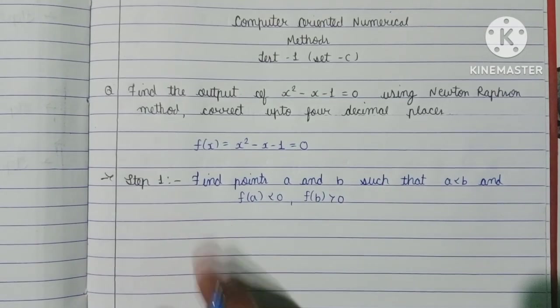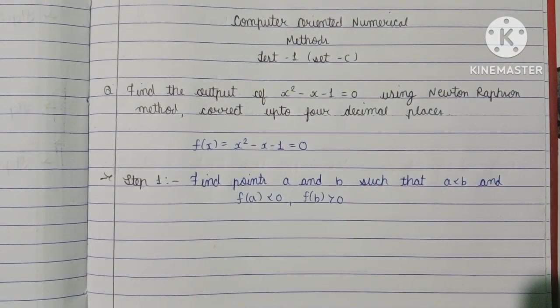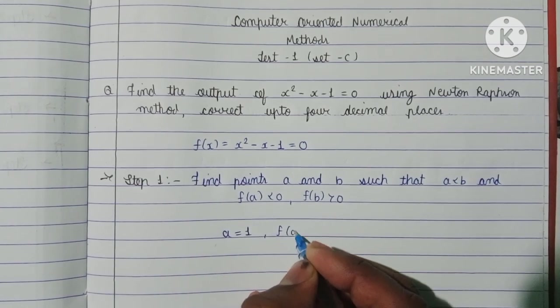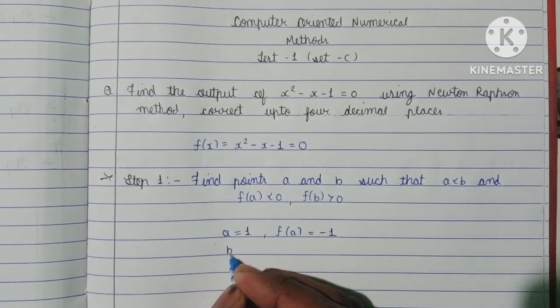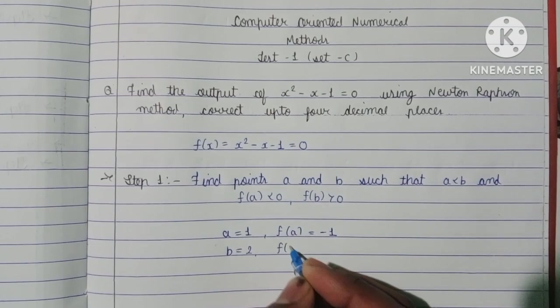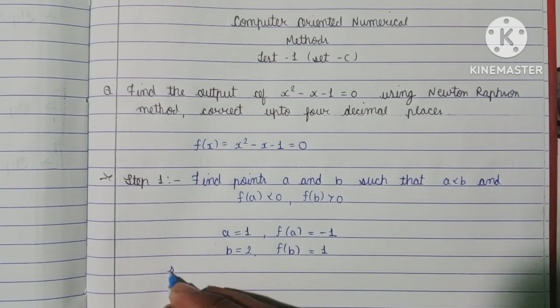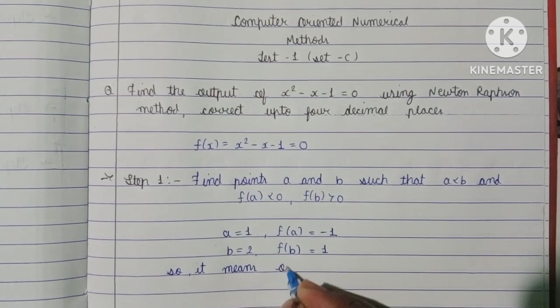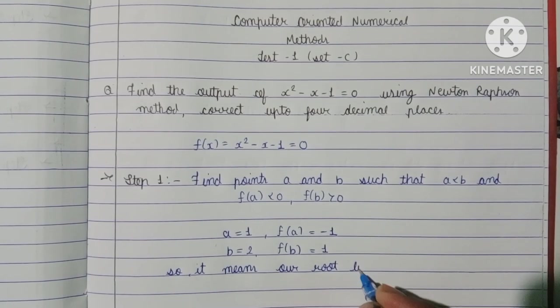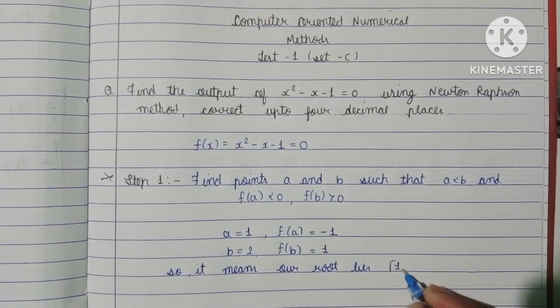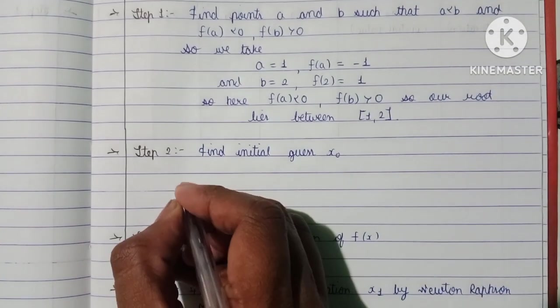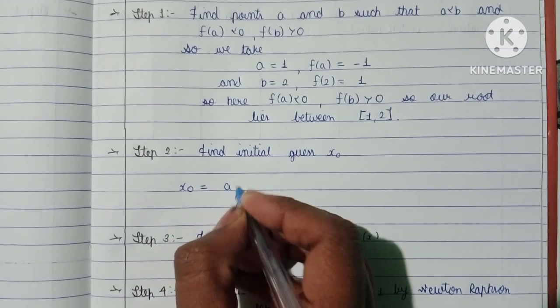Step 1: Find points a and b such that a < b and f(a) < 0, f(b) > 0. We take a = 1 which gives f(a) = -1, and b = 2 which gives f(b) = 1. This means our root lies between 1 and 2.